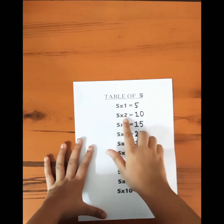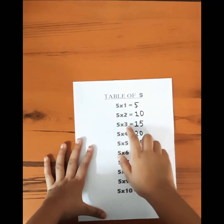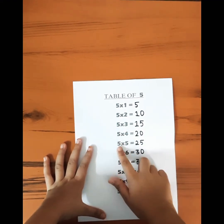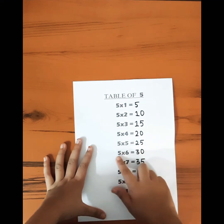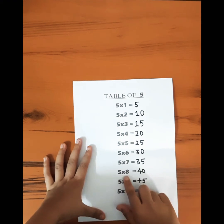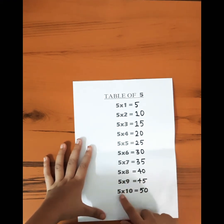Five ones are five, five twos are ten, five threes are fifteen, five fours are twenty, five fives are twenty-five, five sixes are thirty, five sevens are thirty-five, five eights are forty, five nines are forty-five, five tens are fifty.